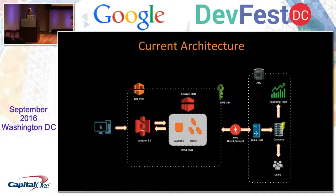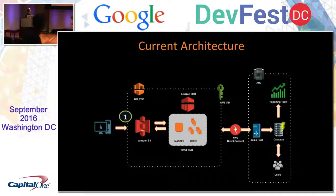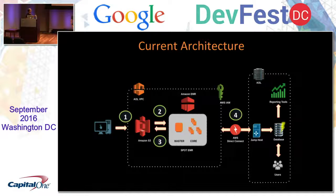We decided to migrate to AWS. We created a simple architecture where source teams push data to S3, EMR reads data from S3, performs all ETL operations, and pushes data back to S3. We did not change the right side of the architecture — the database is still used by users and analysts to query data and create reports. To load data to the database, we created a jump post that extracts data from S3 and loads it to the database.